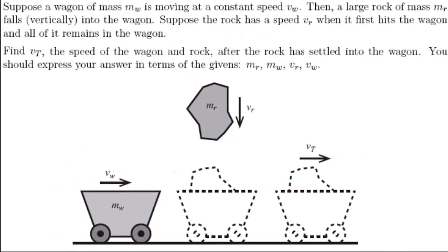So what are we given in this problem? We're given the mass of the rock, the mass of the wagon, the speed of the rock just before it hits the wagon, and the speed of the wagon. The rock is falling vertically downward. The wagon is going horizontally from left to right.